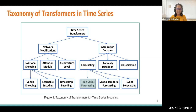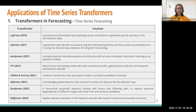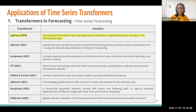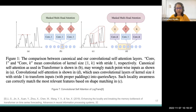Forecasting is one of the most popular and crucial applications of time series. There are many transformer applications in this area, and I will describe two major transformer variants. The first is LogTrans, which is actually the first time series transformer variant introduced. They introduced a convolutional self-attention mechanism. This figure, grabbed from the LogTrans paper, shows the comparison between the standard canonical transformer and the convolutional self-attention they proposed.